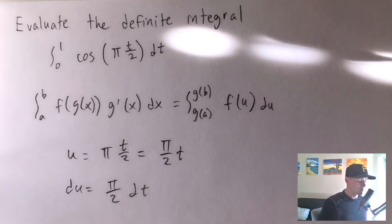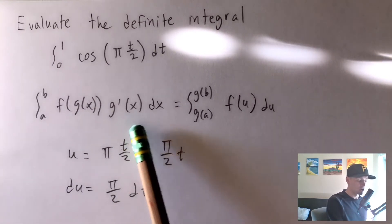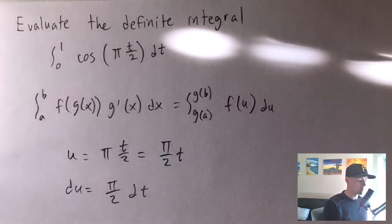So since our derivative is just a constant times dt, we actually don't really need to make sure that g prime of x is somewhere in there because essentially what that results in giving us is just a constant that we can pull out of the integral. So it makes it a little bit easier.